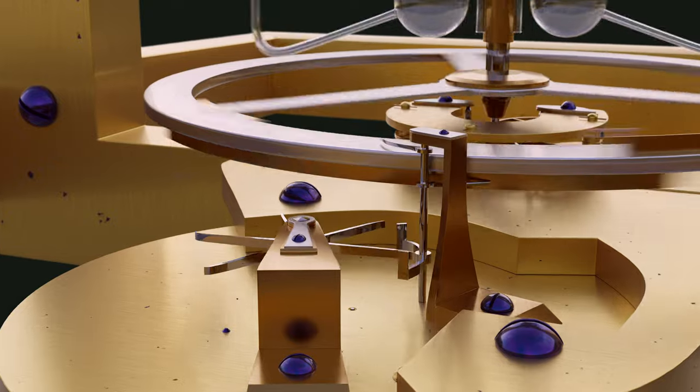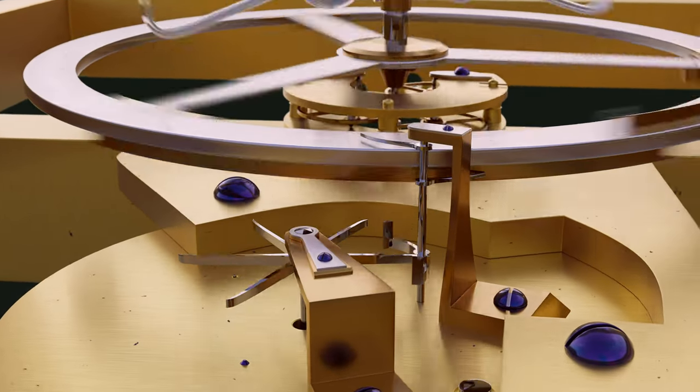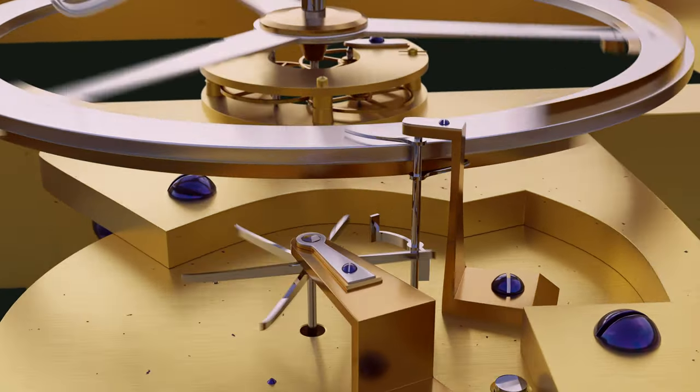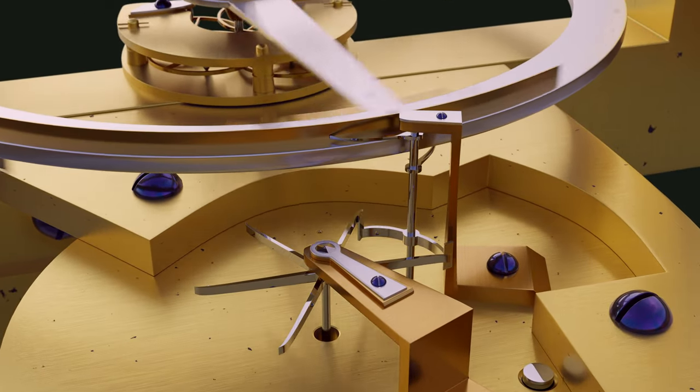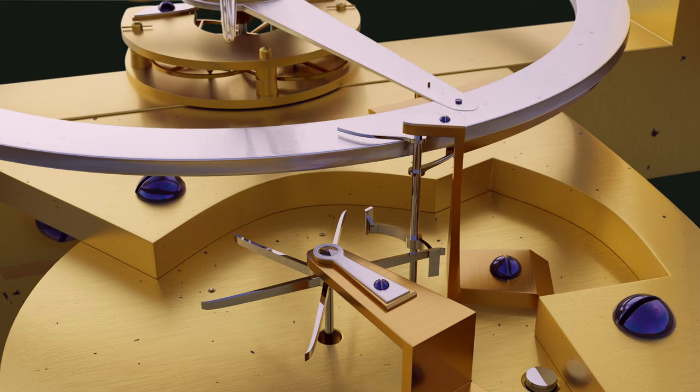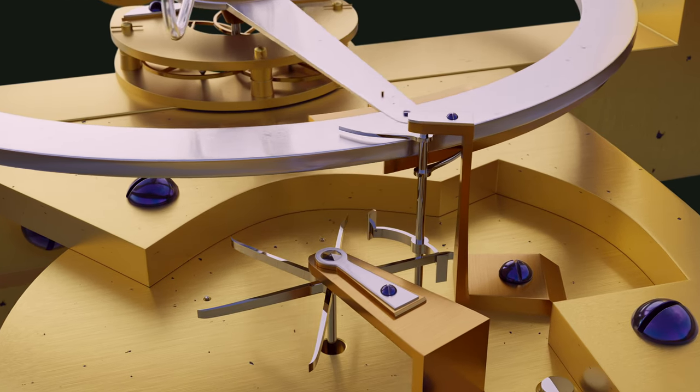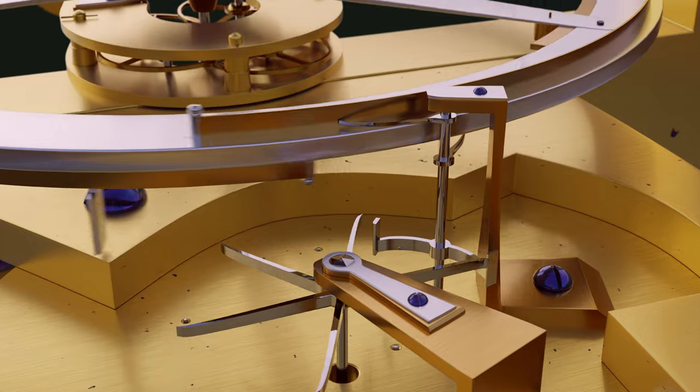The pivoted detent escapement introduced by Pierre Leroy is used to transfer energy from the mechanism to the regulator. The escape wheel transmits an impulse to the balance every second. The balance is left undisturbed during the rest of its path.